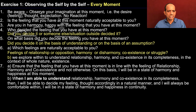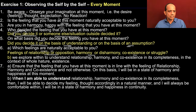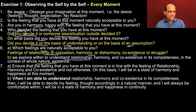In step five you have to ask on what basis did you decide the feeling you have at this moment. Did you decide it on the base of understanding or on the base of some assumption, some preconditioning? You will see that when you decide on the base of assumption you are not happy — there is no definiteness. When you decide on the base of understanding then there is definiteness. So you ask yourself which feelings are naturally acceptable to you: feeling of relationship or opposition, harmony or disharmony, coexistence or struggle? Then you decide that you have to explore within to understand relationship, harmony and coexistence in its completeness in the context of whole nature, whole existence. And then in step seven you are trying to ensure the right feeling — that the feeling you have at this moment is in line with the feeling of relationship, harmony and coexistence.